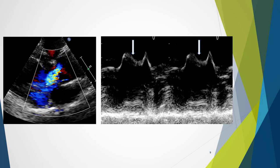Here we can see a very posteriorly directed aortic regurgitation associated with a bicuspid valve. The flow moves directly down and hits the anterior leaflet of the mitral valve — a good example of the Austin Flint murmur. We can also see this represented on M-mode: normal mitral movement profiles are present, except for this component showing fluttering and thickening of the mitral valve, where it is trying to open but is simultaneously being forced downwards by the aortic regurgitation.